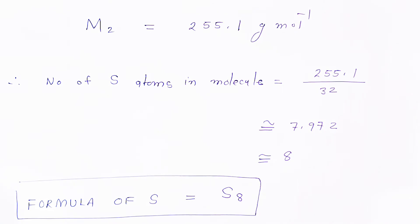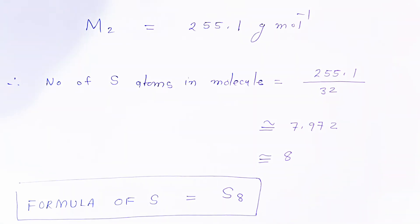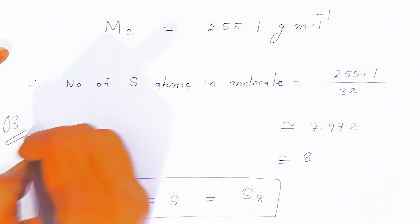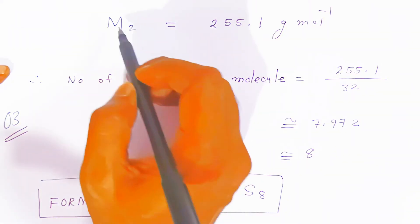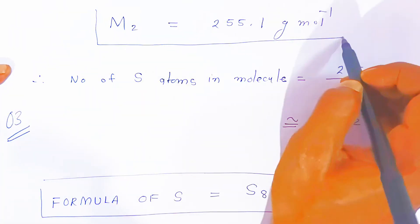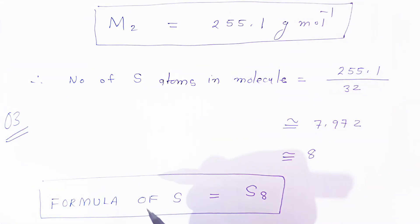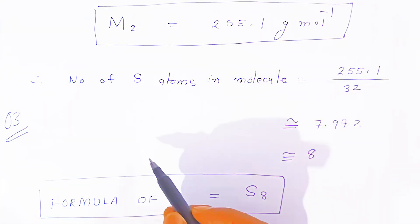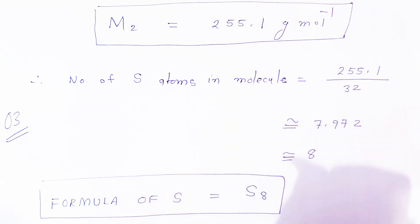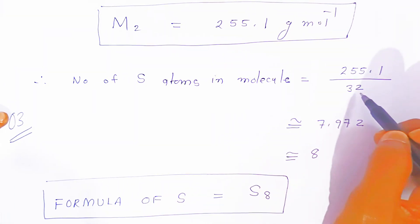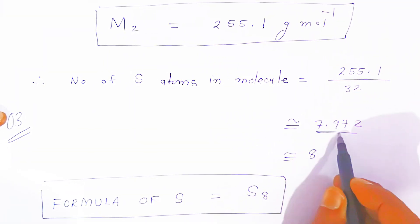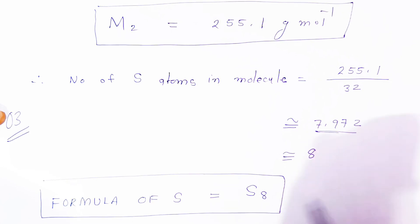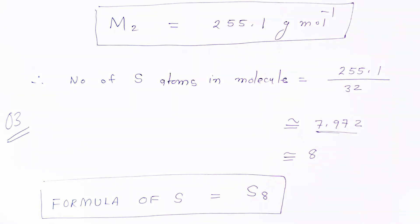So this is how you solve such problems. For 3-mark examination questions, first calculate the molar mass of the solute using the boiling point elevation formula, then divide the molar mass by the atomic mass to get the number of sulfur atoms in the molecule. Dividing 255.1 by 32 gives approximately 8, so the molecular formula is S₈.